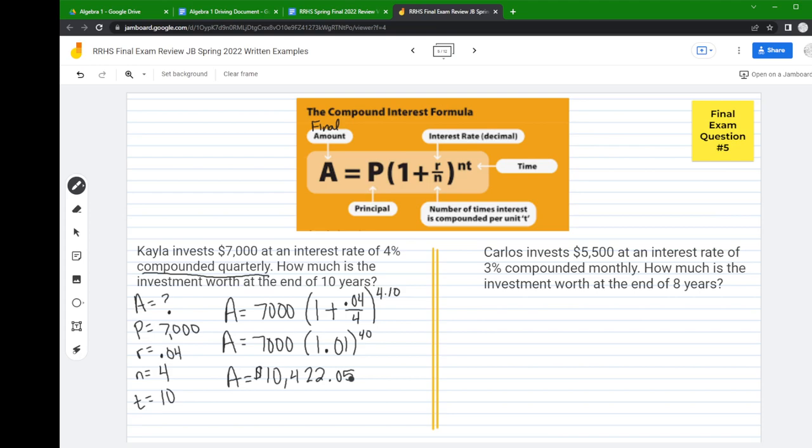Let's try that again. I'm filling in my values. Carlos invests five thousand five hundred dollars - that's your principal. At an interest rate of three percent - that's my R. Compounded monthly - how many months are in a year? Twelve. How much is the investment worth at the end of eight years? That's my time.